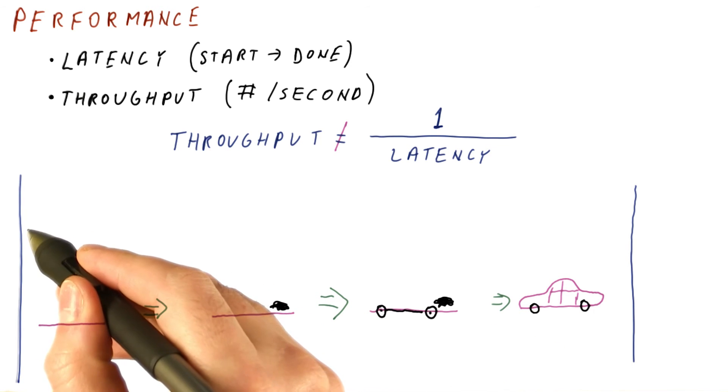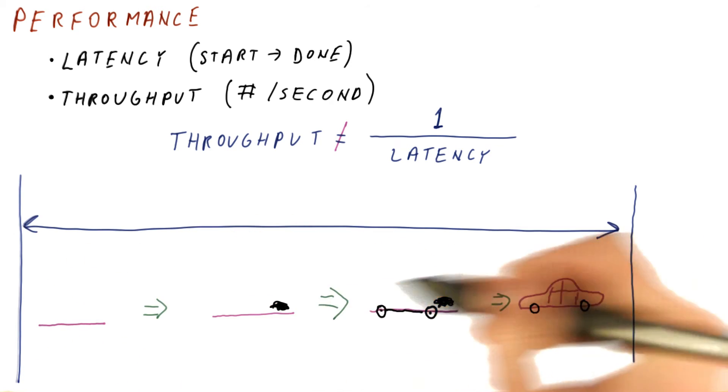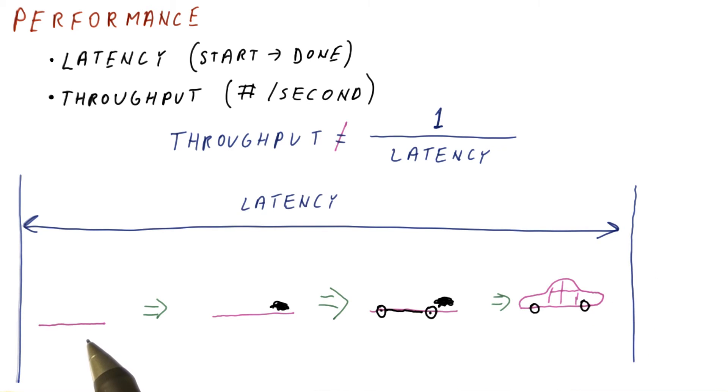So the latency is from here to here. Here's where we began the car. Here's where we have a final car. But we have an assembly line.